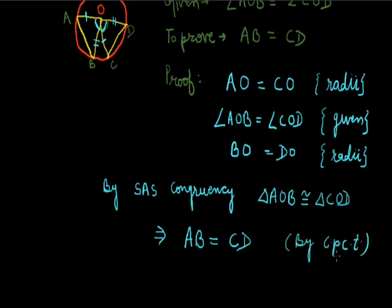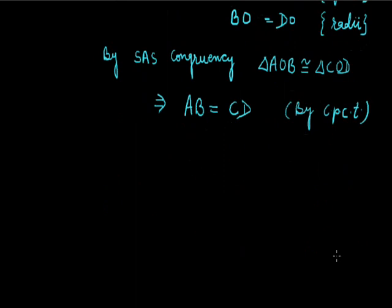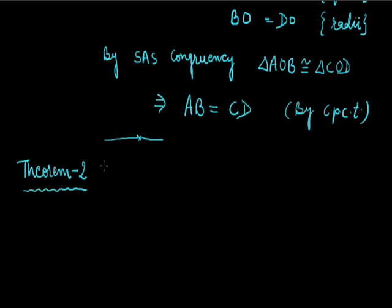This was the converse of theorem number 1. Now the next theorem: Theorem number 2 states that the perpendicular from the center of a circle to a chord always bisects the chord.